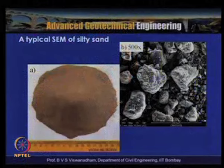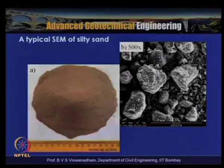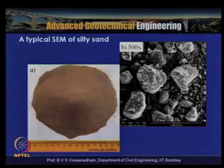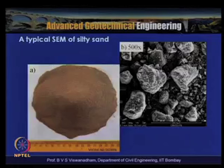As discussed in the previous lectures, a typical silty sand in a dry heap is shown on the left-hand side figure. On the right-hand side, a 500 times magnified SEM photograph shows coarse sand particles and some fine silt particles. This allows us to look into the different particle arrangements with respect to the SEM.